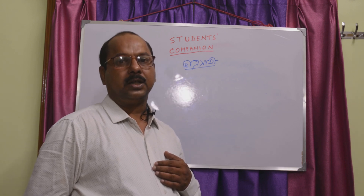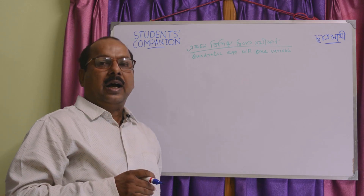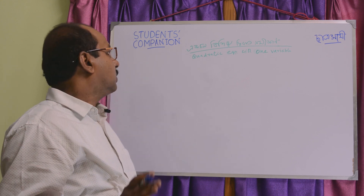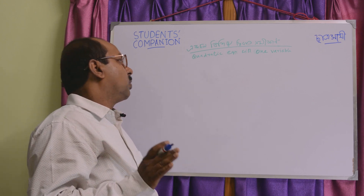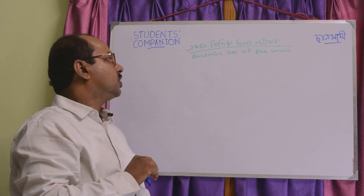The first chapter is 4 marks — objective, multiple choice, fill in the blanks, and true or false. The second chapter is broken into 1 mark, 2 marks, 2 marks, and 2 marks sections. The second chapter covers 3 marks on Quadratic Equations with one variable.